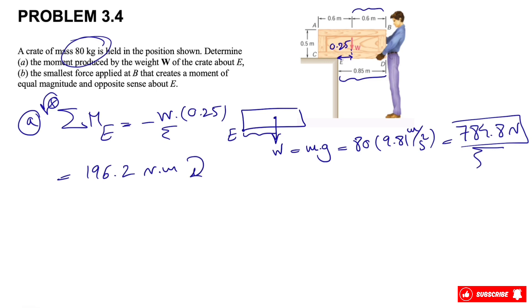That was part A of the question. In part B, we need to find the smallest force applied at B in order to create a moment of equal magnitude to what we found in part A, and obviously it has to be in the opposite sense in order to stay in equilibrium condition.